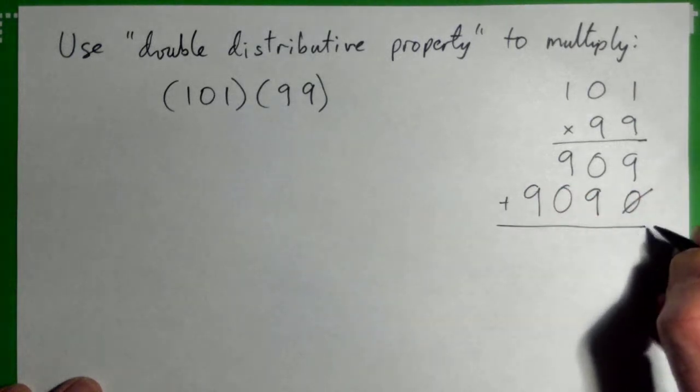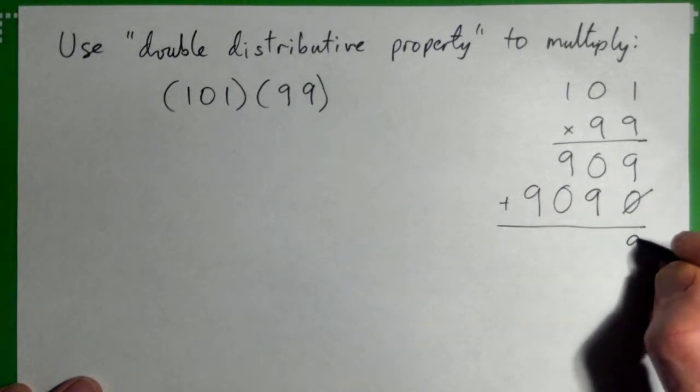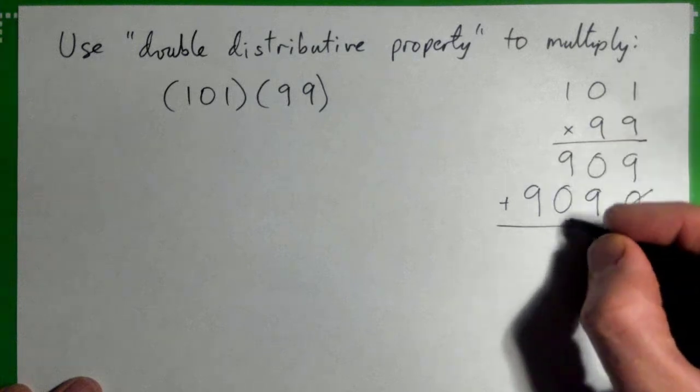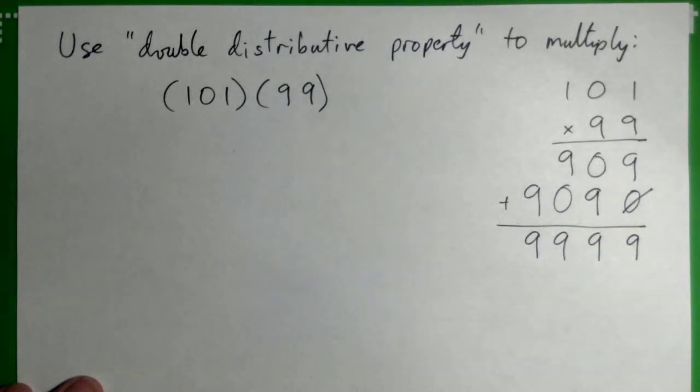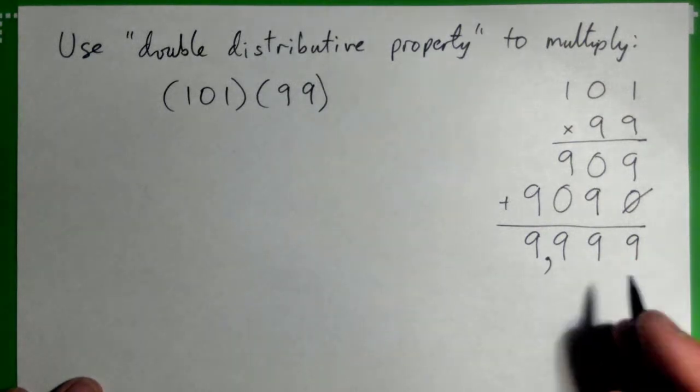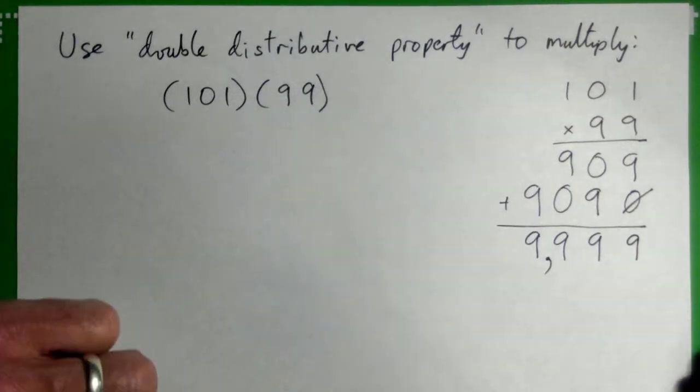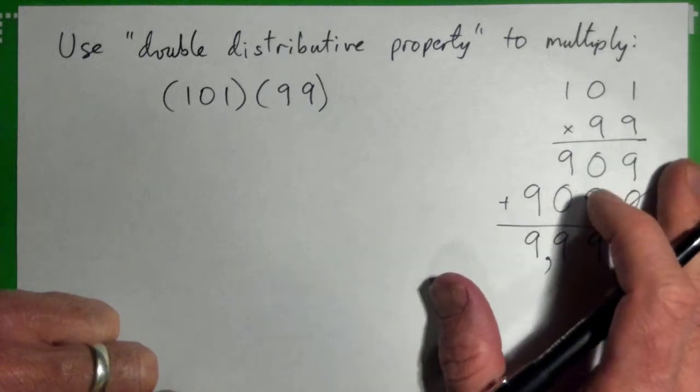You with me? So nine and zero is nine, zero, nine and nine is nine, nine and nine is nine, and that's nine. So what number is that? Nine thousand nine hundred and ninety-nine. Good. So that would be long multiplication.